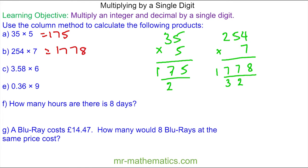We'll move on to question C. So 3.58 multiplied by 6. Before we begin the calculations we'll add in the decimal point.